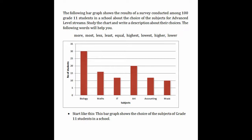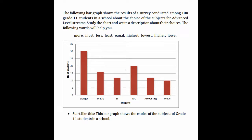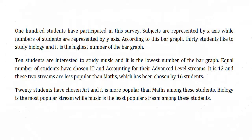The following words will help you. This paragraph shows the choice of subjects of grade 11 students in a school. Subjects are represented by the x-axis, while numbers of students are represented by the y-axis.